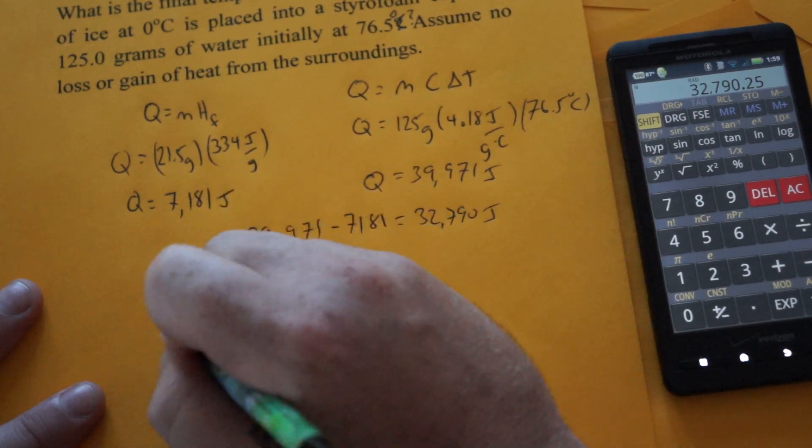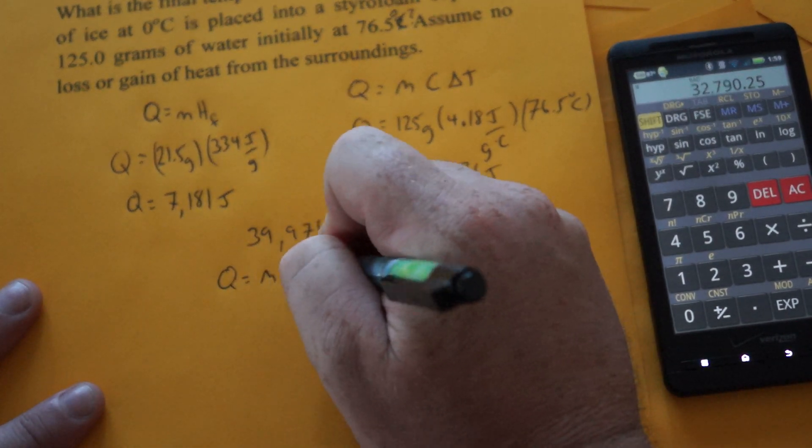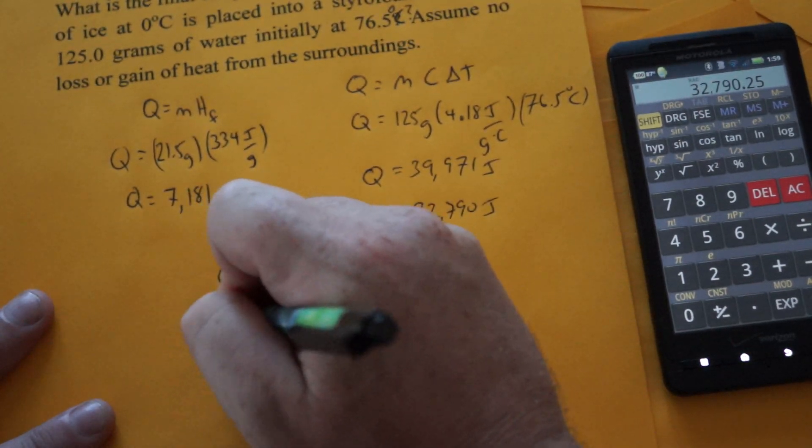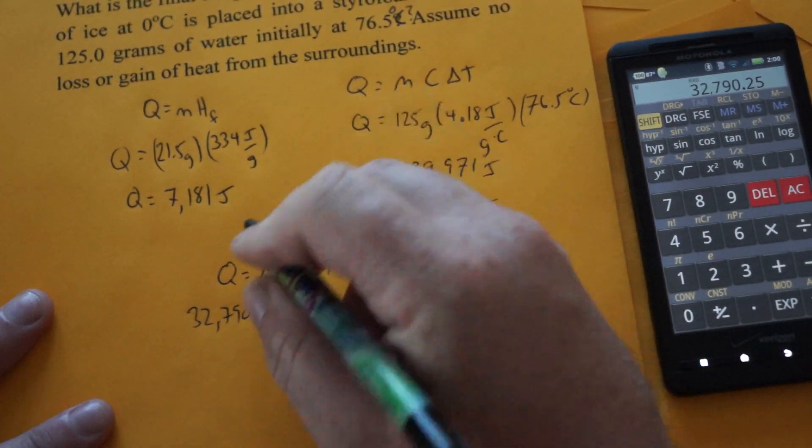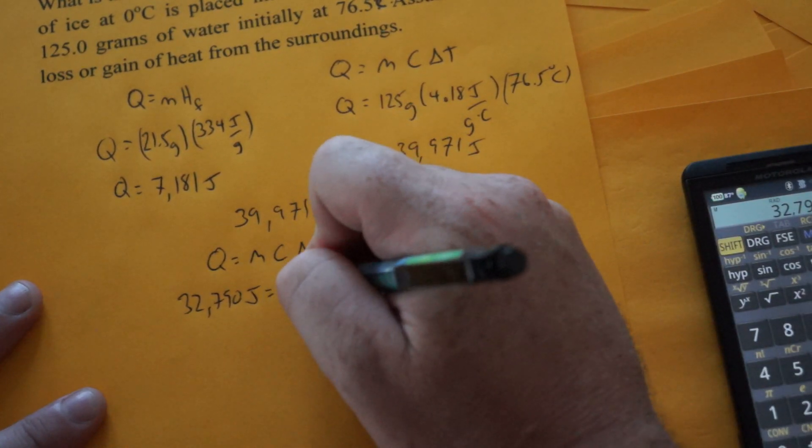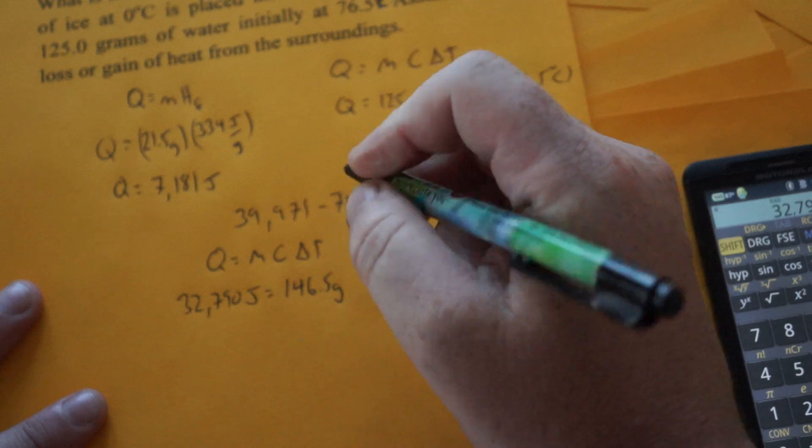So we have our Q equals MC delta T. We have 32,790 joules. The mass is now additive. So that's 146.5 grams of melted water.